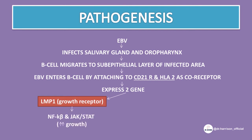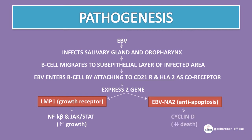It also activates the anti-apoptotic BCL-2 protein. Epstein-Barr virus nuclear antigen 2 activates host cell cyclin D, which increases cell proliferation. By this mechanism, they transform normal B cells to atypical B lymphocytes and cause various lymphoproliferative disorders.